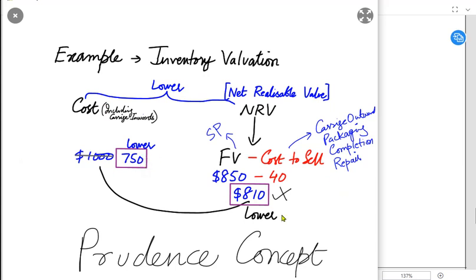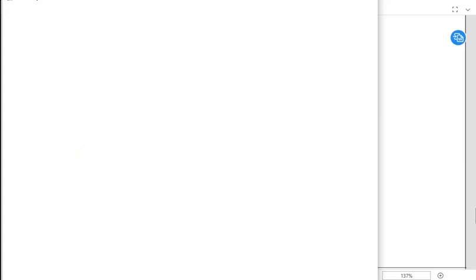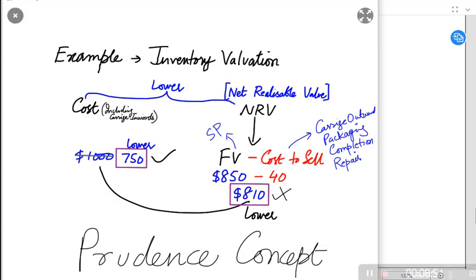We need to see two costs - one is cost and one is NRV - and we will always be going for the lower value out of these two values.